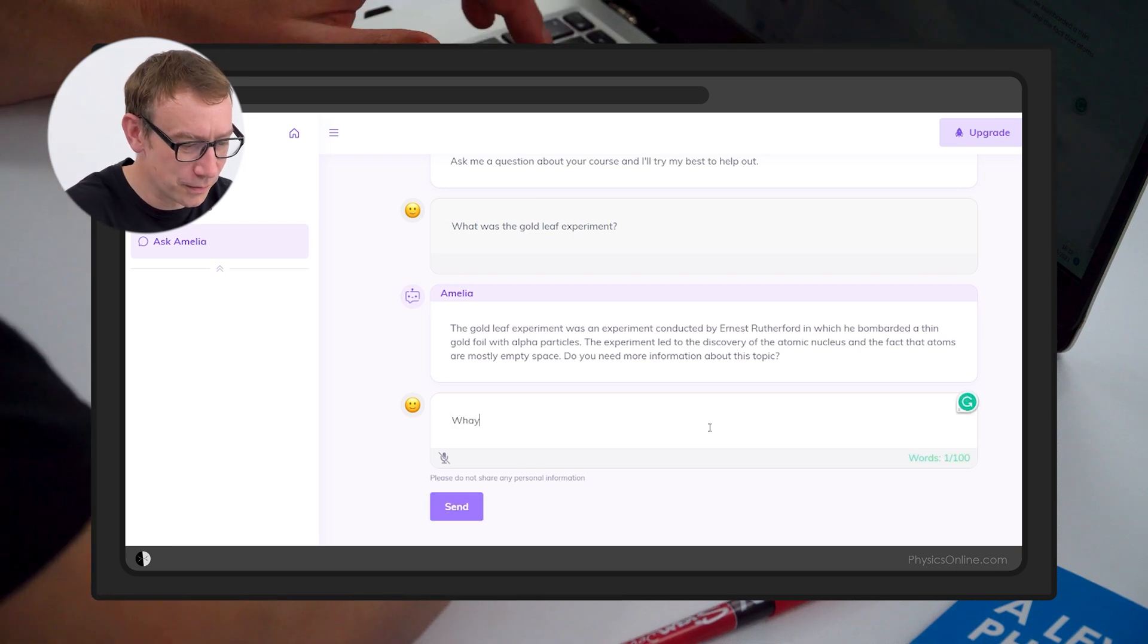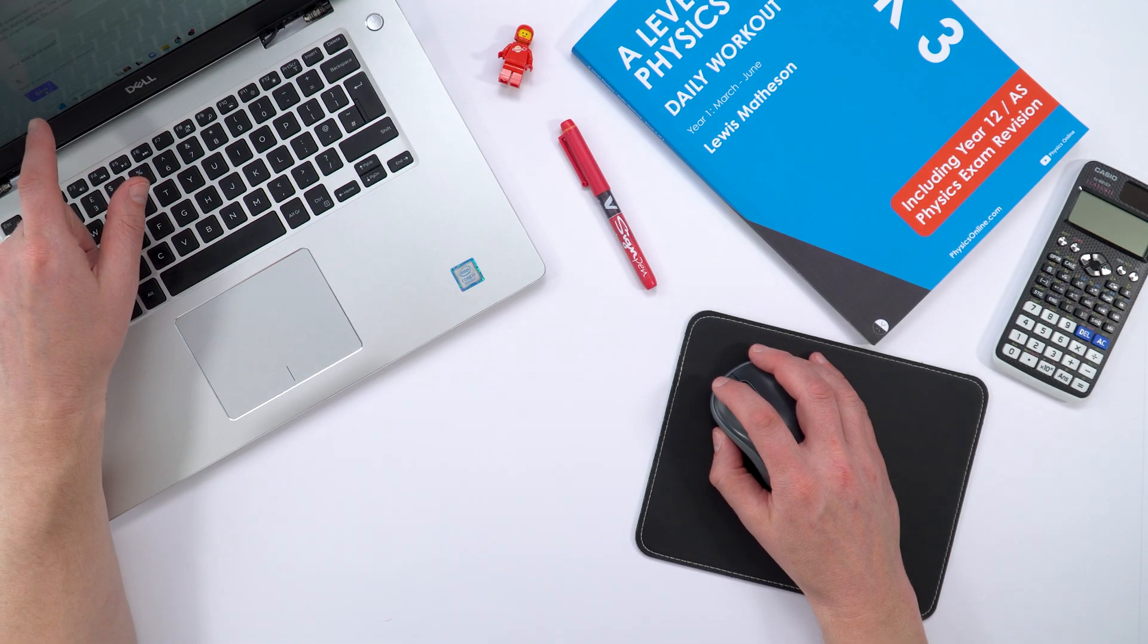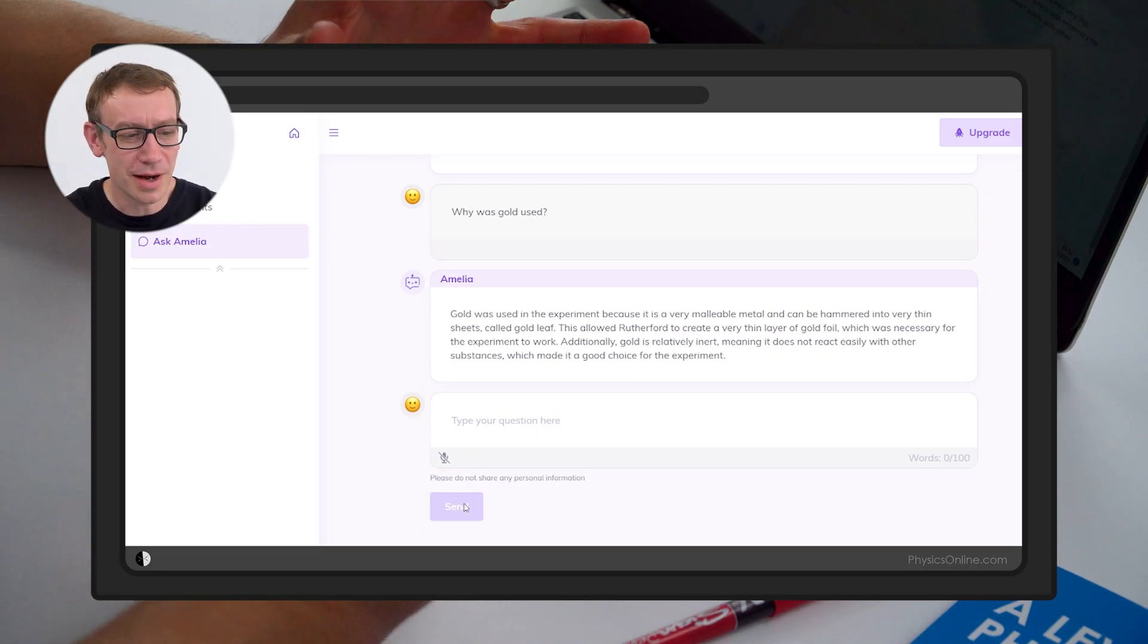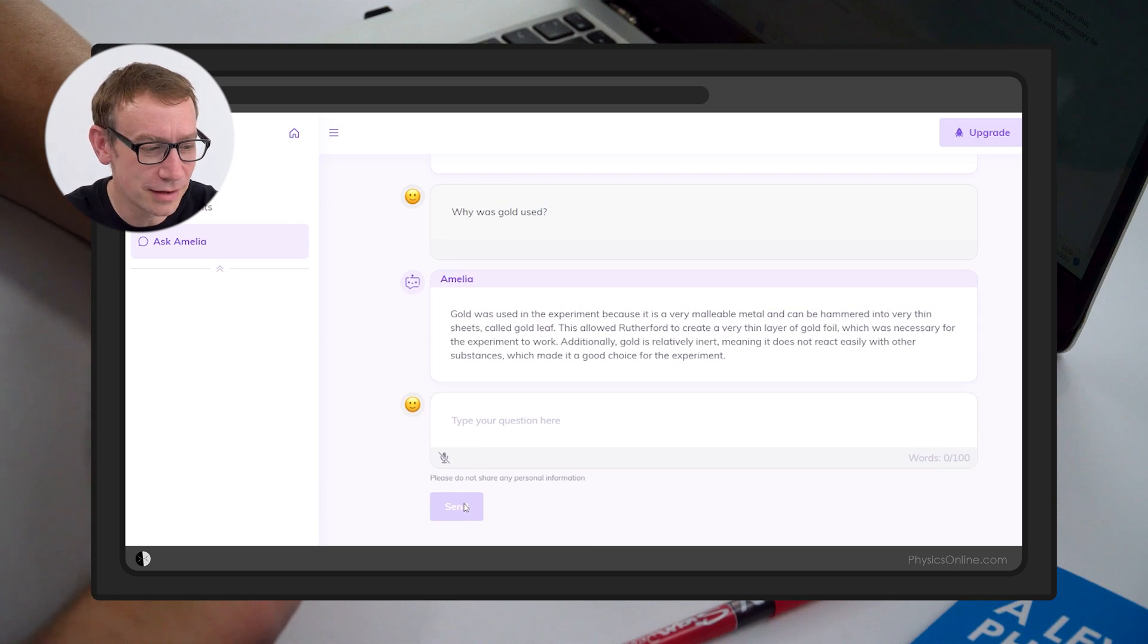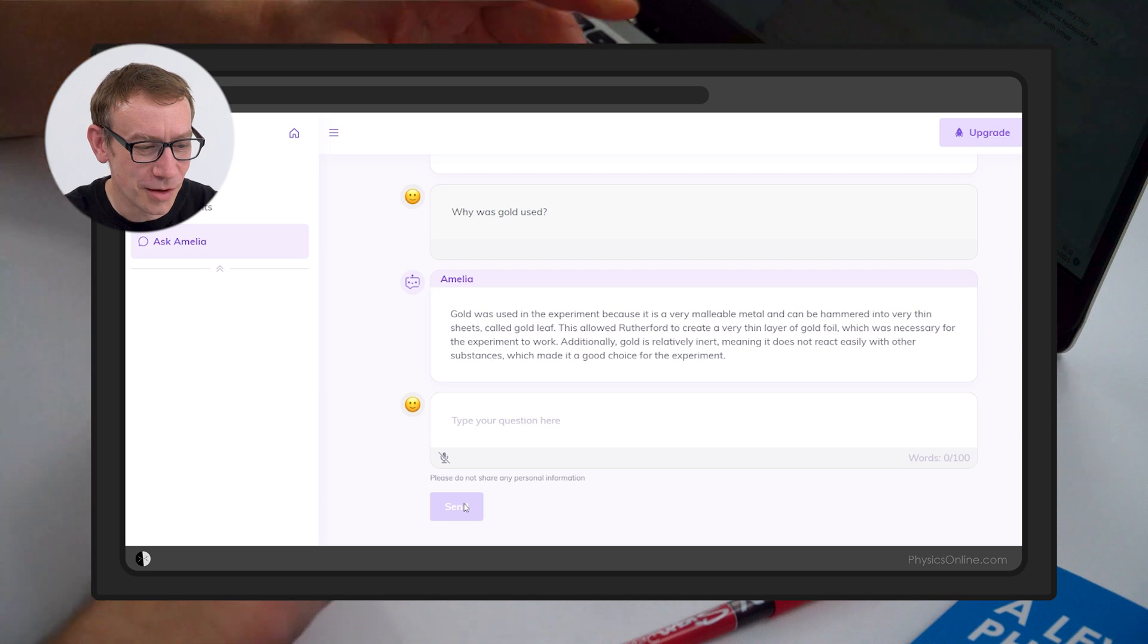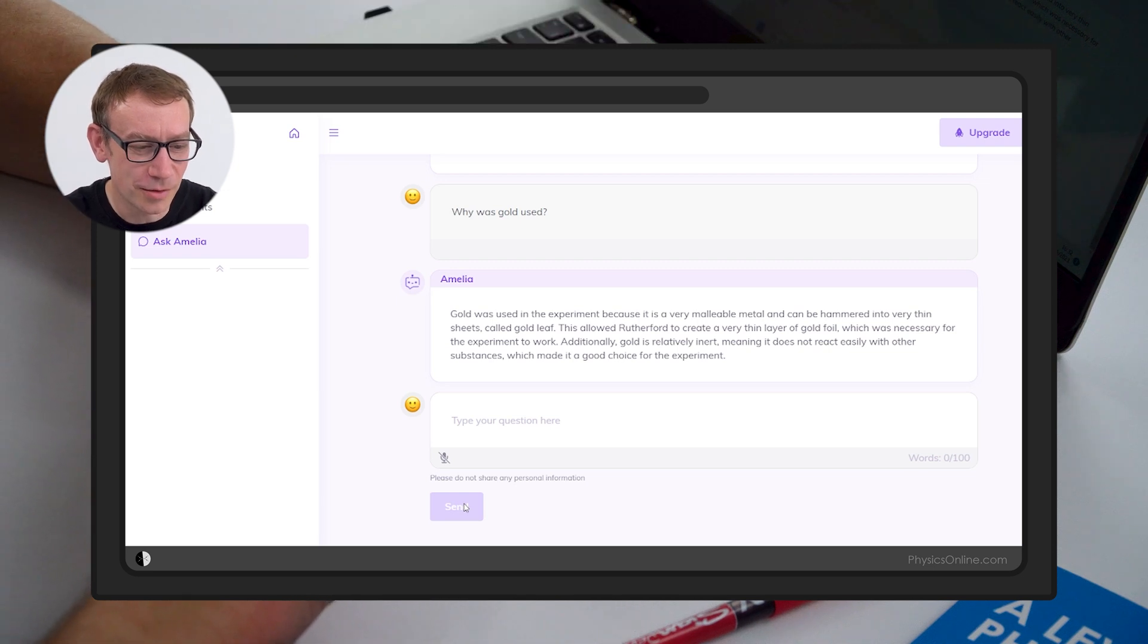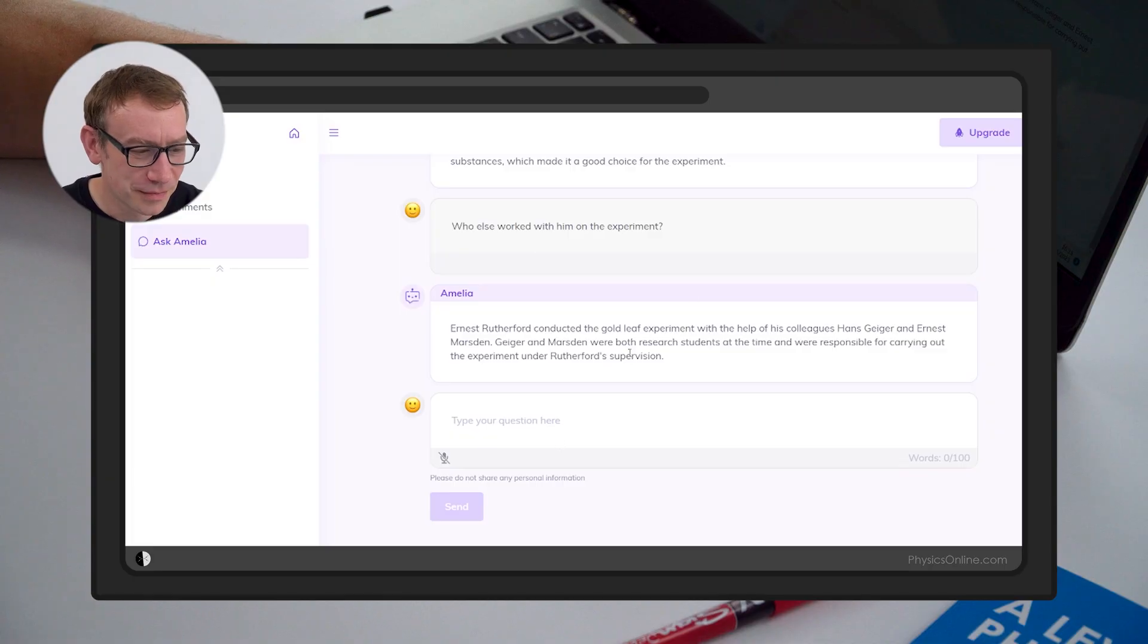Okay, so why was gold used? Why not some other material? Gold was used because it's a very thin malleable material. It can be hammered into very thin sheets called gold leaf. Yeah, also it's relatively inert, meaning it does not react easily with other substances, which make it a good choice for the experiment. So who else worked with them on the experiment? We've got Hans Geiger, Ernst Marsden. There we go.